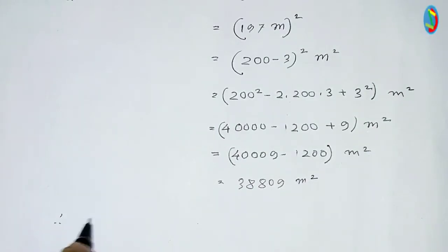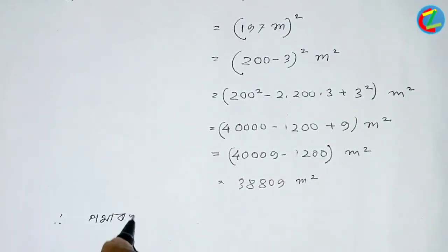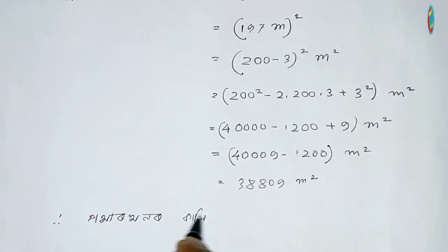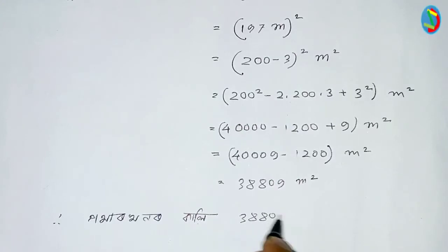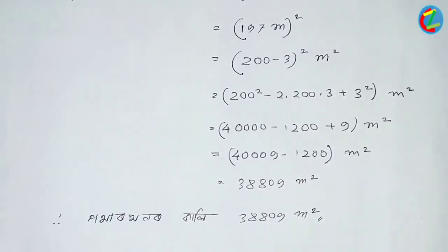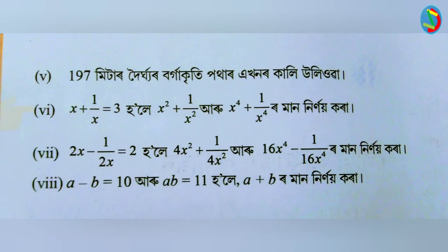So if you have a question, this is the question: the answer is 3800 meter squared. We will have an answer of 8 square meters. For example, let's say x plus 1 by x is equal to 3, and we need to find x squared plus 1 by x squared.